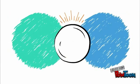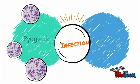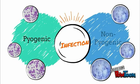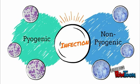This inflammation is usually caused by an infection, and this infection can either be pyogenic or non-pyogenic. Staphylococcus aureus is the most common cause of pyogenic osteomyelitis, and the most common cause of non-pyogenic osteomyelitis is Mycobacterium tuberculosis.